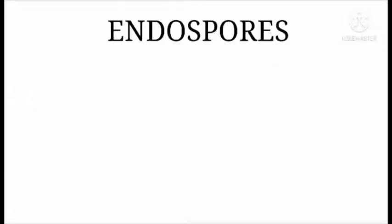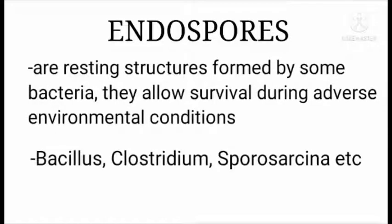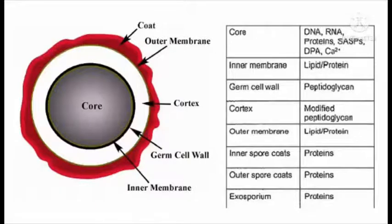Functions of endospores, sporulation, and endospore germination. Endospores are resting structures formed by a number of gram-positive bacteria, developing within vegetative bacterial cells such as Bacillus, Clostridium, and Sporosarcina. They allow survival during adverse environmental conditions. The structure of an endospore: the core contains DNA, RNA, and proteins; the inner membrane has lipid and protein; the germ cell wall contains peptidoglycan; the cortex is made up of modified peptidoglycan; the outer membrane has lipid and protein; and the inner and outer spore coats and exosporium are made up of proteins.